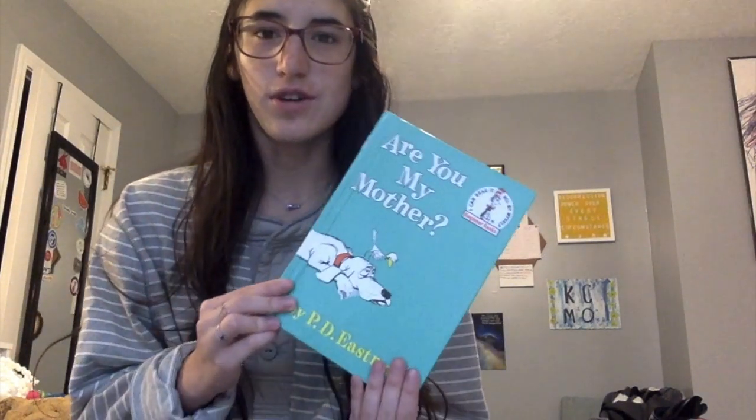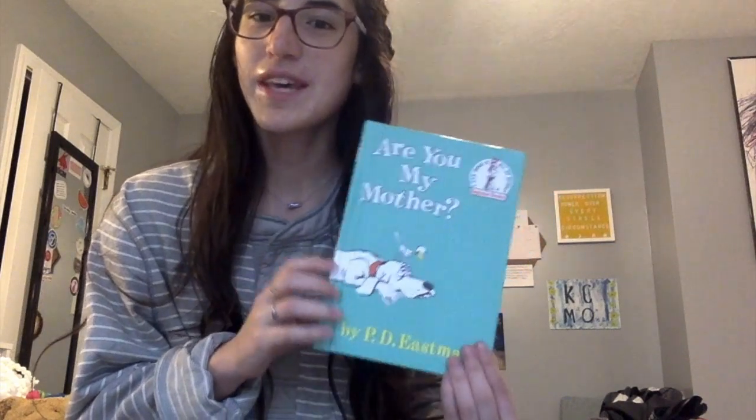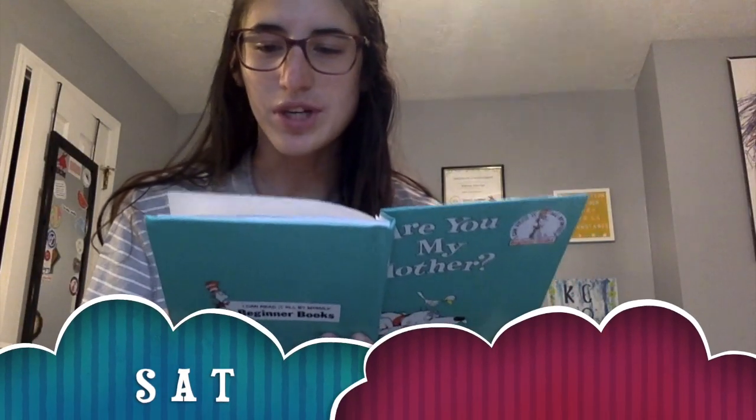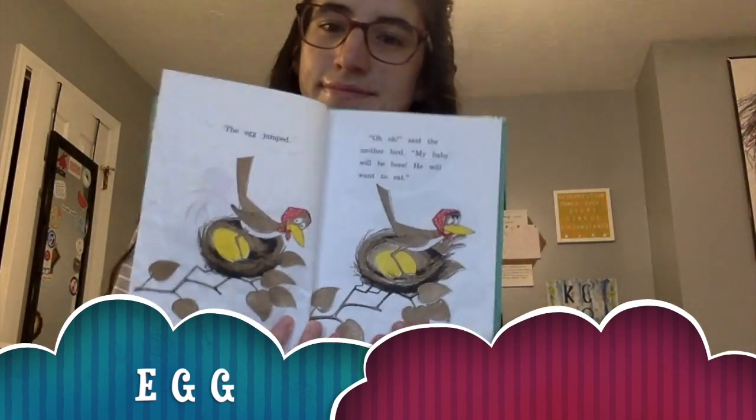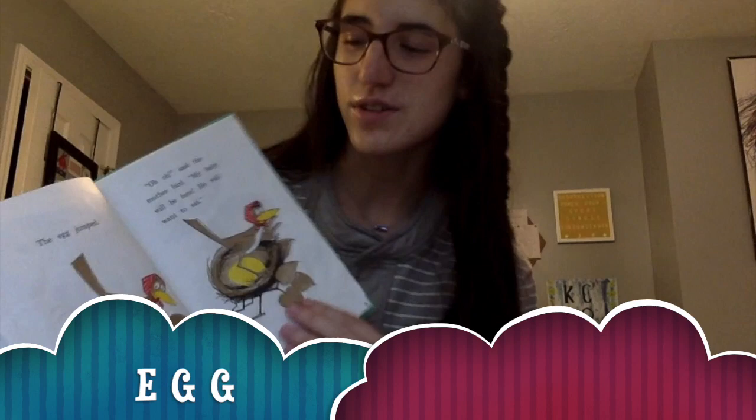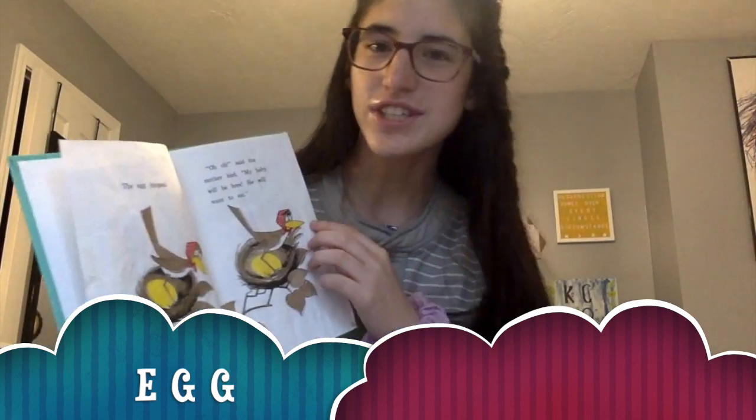Alright, so today's story is called Are You My Mother? It's by P.D. Eastman. So let's see what this story is about. A mother bird sat on her egg. So this sight word is sat — S-A-T. The egg jumped. Oh, said the mother bird, my baby will be here. He will want to eat. So this one is egg — E-G-G.